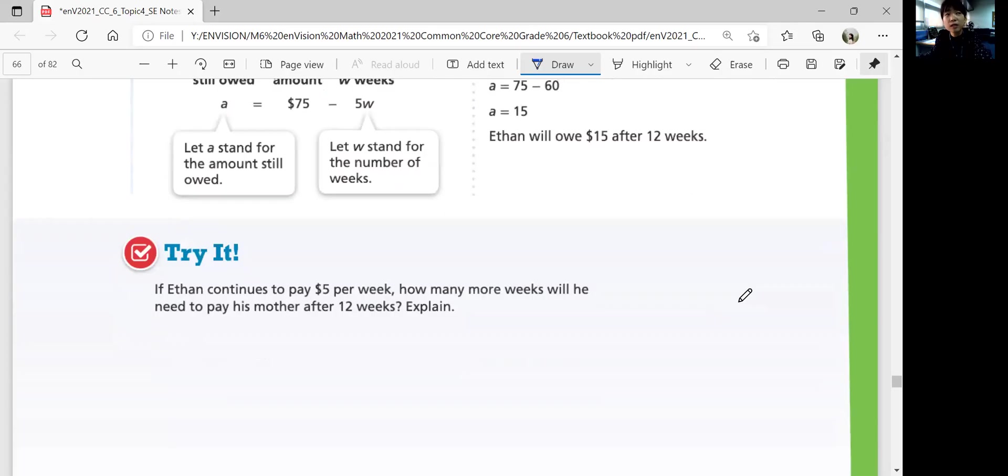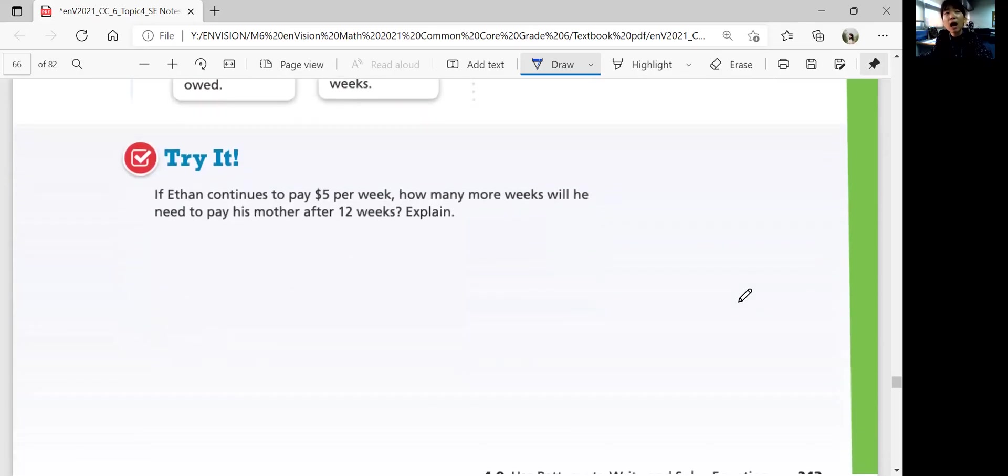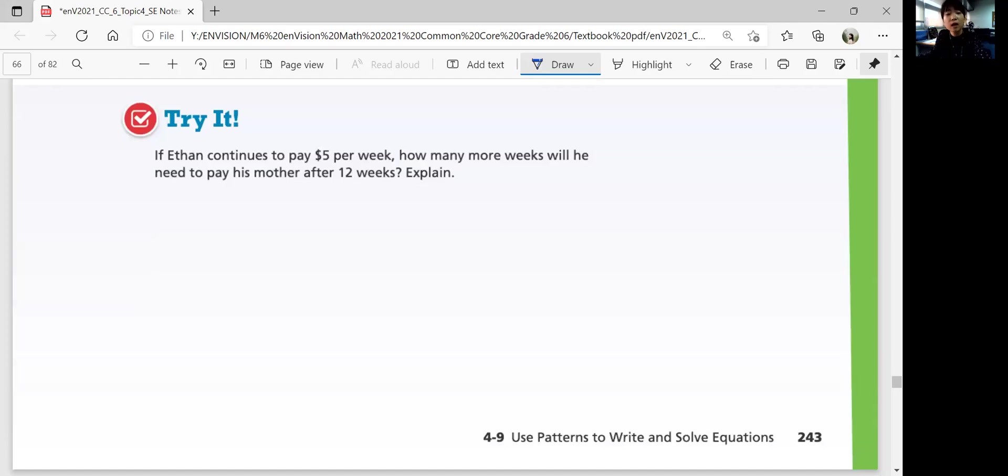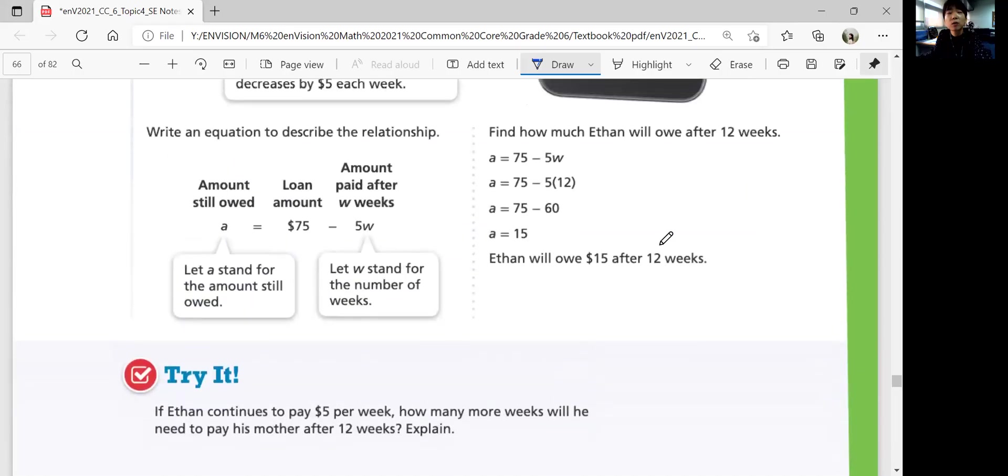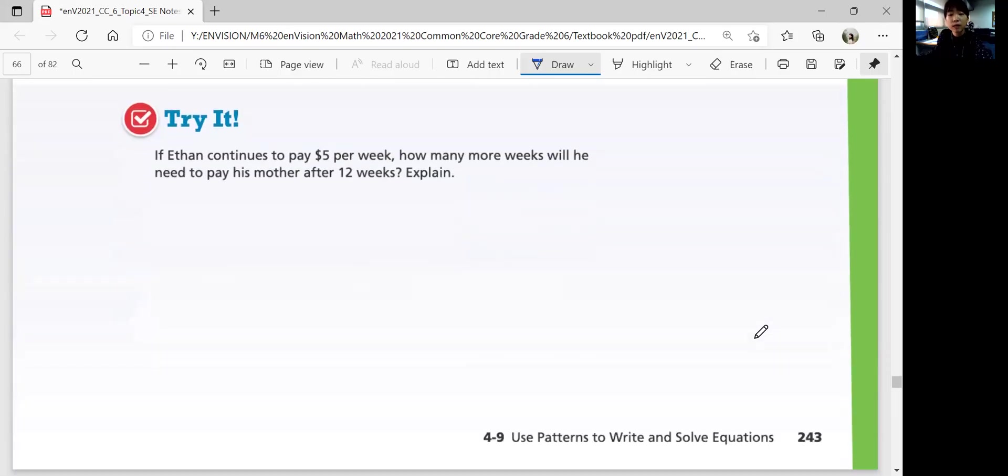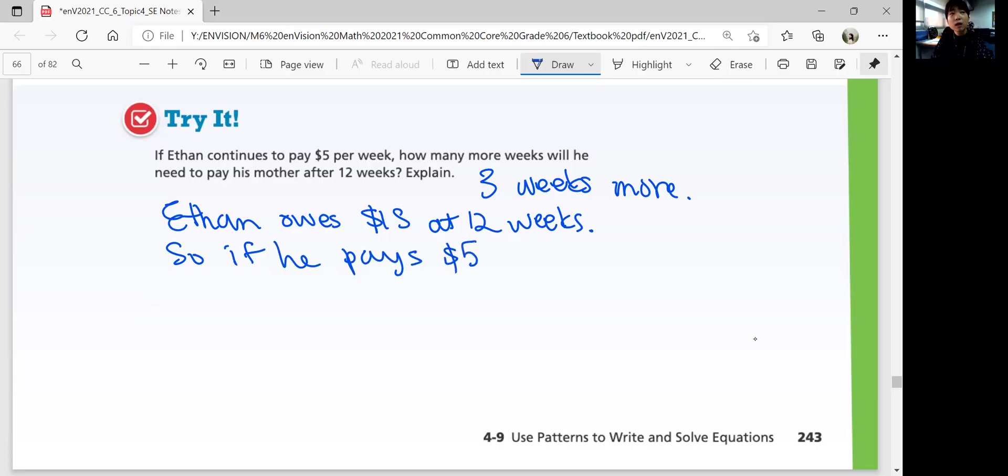Let's look at Try It. If Ethan continues to pay $5 per week, how many more weeks will he need to pay his mother after 12 weeks? How much more? If he pays 5 every week, we just talked about it, 5 times 3 is 15. So he needs to pay 3 weeks more. Explain. If Ethan owes $15 at 12 weeks, so if he pays $5 times 3 weeks, he will pay what he owes.